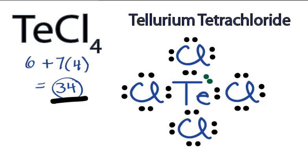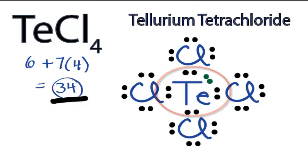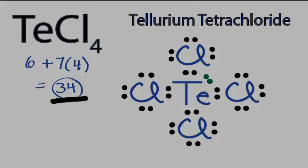Because tellurium is below period 2 on the periodic table, it can have an expanded octet — more than 8 valence electrons. So we've satisfied the octets on the chlorines, and the Te has more than 8, but that's okay. This is the Lewis structure for TeCl4. Thanks for watching.